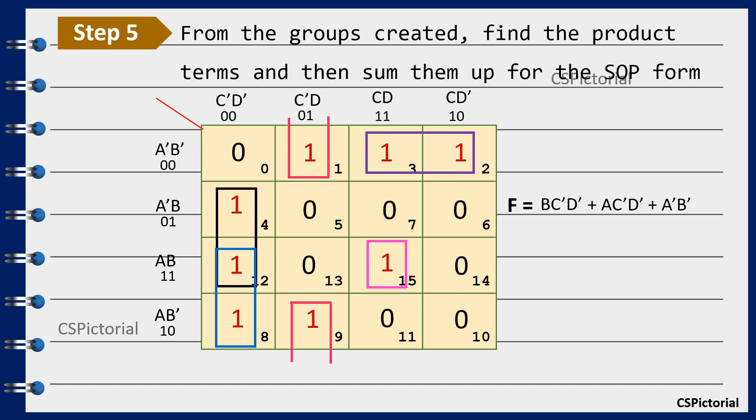In this case since there is no adjacent cell containing one we make a group of only one cell. This results in the expression a b c d.